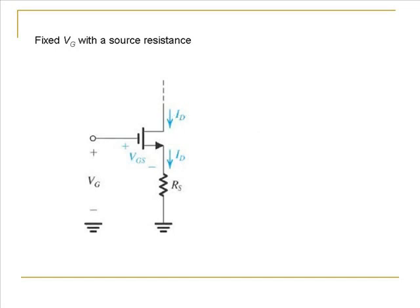One excellent way of biasing the MOSFET is to have a constant gate voltage and add a source resistance. Of course if we write the equation for the gate voltage you would see that the gate voltage is the sum of the gate source voltage VGS and the drop across the resistance RS which will be RS into the drain current.